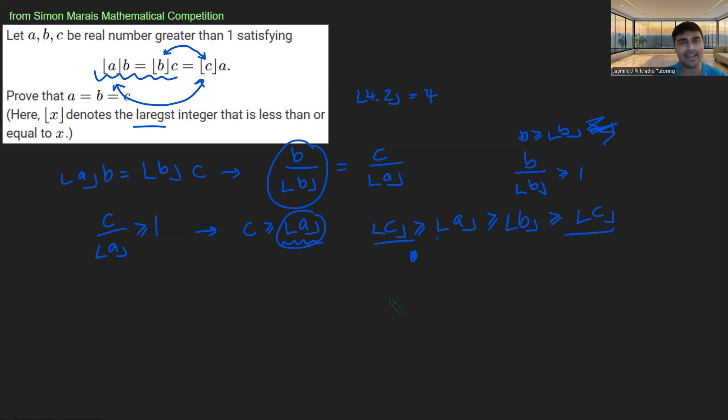And floor of C is therefore at least floor of C. And so everything in the middle must be the same. And so therefore, I can deduce that floor of A equals floor of B equals floor of C.